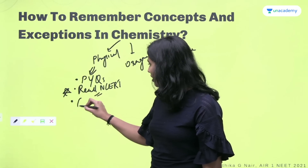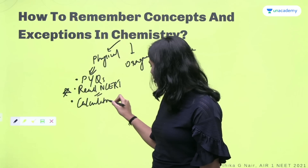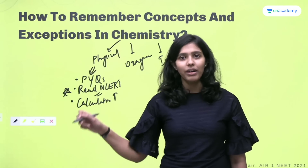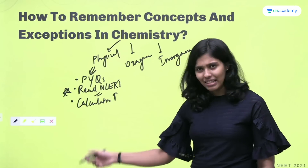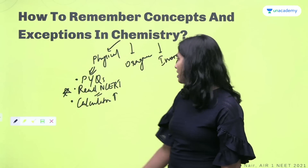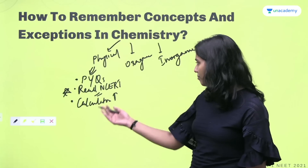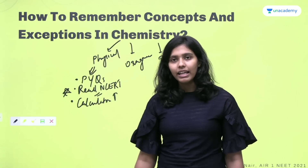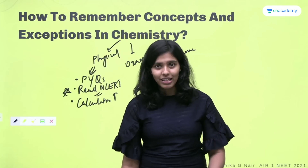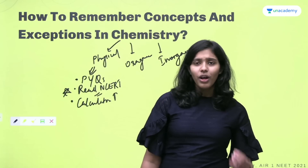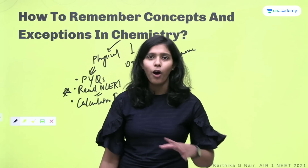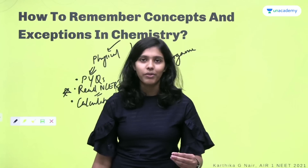Then you need to improve calculation speed. In physical chemistry overall, exceptions are fewer — they exist but are less and easier to remember. You must go through NCERT theory. Concepts must be understood well because once you understand the topic, no one can stop you from solving the numericals, however difficult they may be. And in physical chemistry, questions beyond a certain difficulty level don't really appear. So that is about physical chemistry — very scoring, very easy.